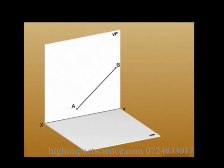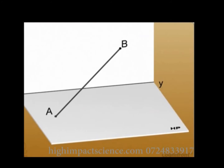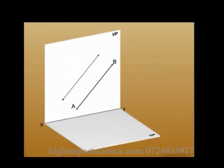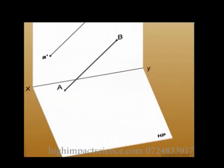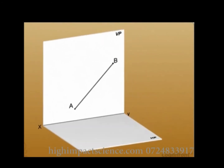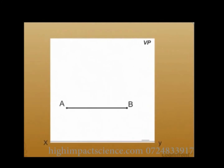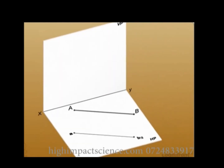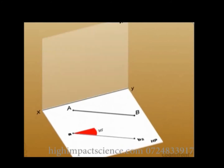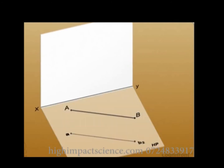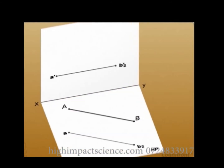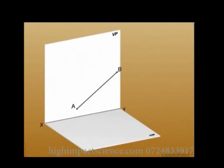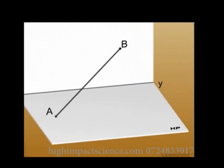Consider line AB parallel to VP and inclined to HP by an angle of 45 degrees. Its projection A'B' on VP gives its true length and inclination with XY. The top projection is a shorter line AB1 parallel to XY. Reversing the case, the line is parallel to HP and inclined to VP by 30 degrees. The projection AB2 is the top view and makes an angle of 30 degrees. Since the line is now parallel to HP, its front view is the line A'B'2 parallel to XY. The angle between a line and a plane is the angle between the line and its projection on the plane.